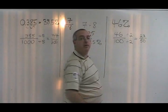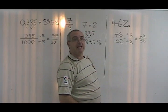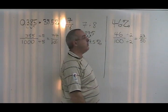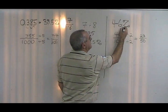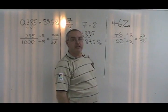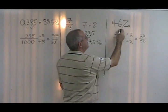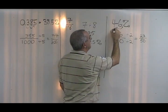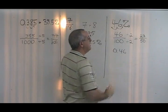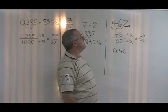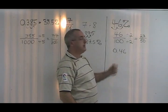To convert 46% to a decimal, we have to realize that there is a decimal right here after the 6, and we move that decimal two spaces to the left. We end up with 0.46. We take away the percentage sign because this is no longer a percent. It is now a decimal.